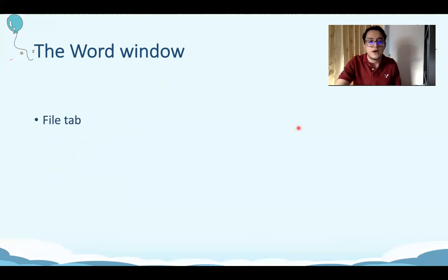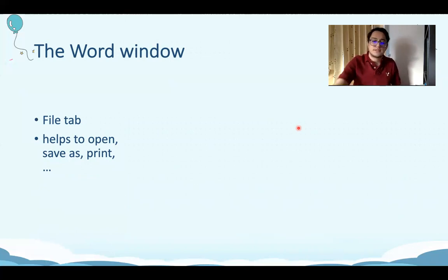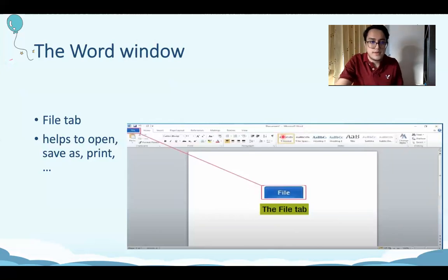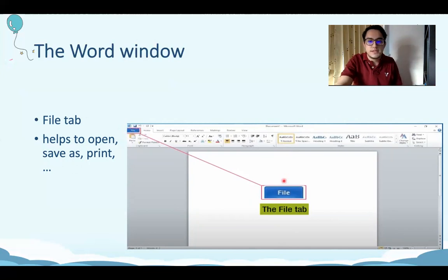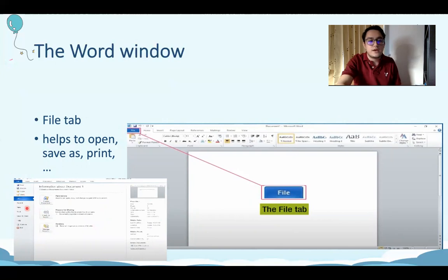Next, we are talking about the file tab. Can you say it with me? File tab. What does the file tab do? It helps you to open a new file, save as, or print, and many more. So where is your file tab? It's right on the left top corner. So this is your file tab. Once you click on it, you get this tab — it opens into another tab that you have many options to choose from.